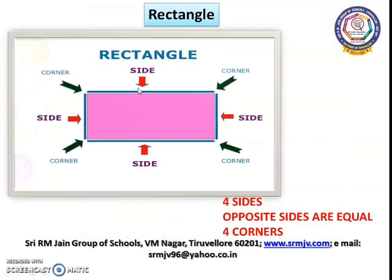This is a rectangle. Rectangle has four sides and four corners. Opposite sides are equal.